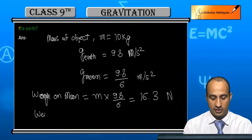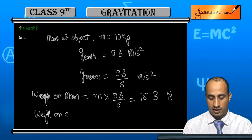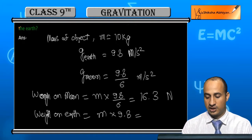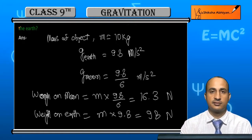If we calculate weight on earth, weight on earth is equal to mass into 9.8, which comes to 98 newton.